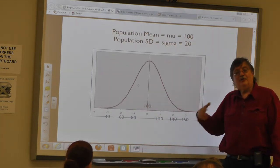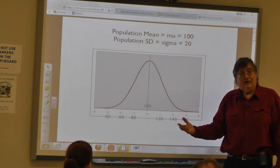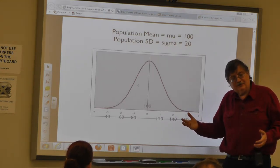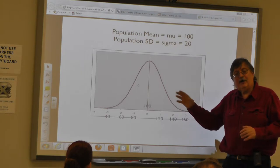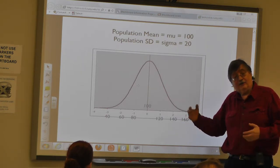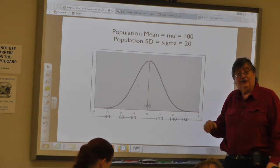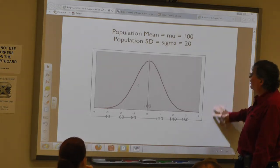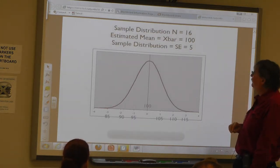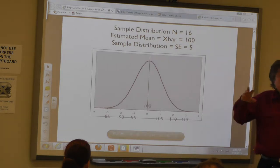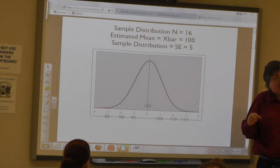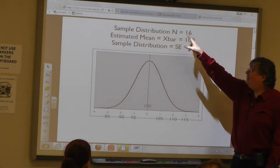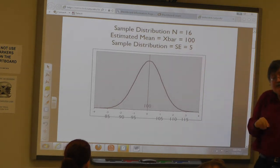So we have a good idea of how this population is distributed. We never really get to work with this population — it's an exercise for us because we're making believe that we really know the values for the entire population. Now let's take a look at what happens if instead I take repeated samples of size 16 from that population.